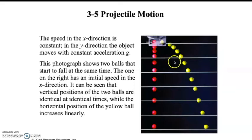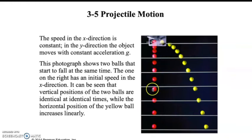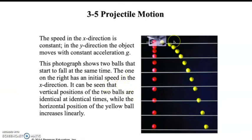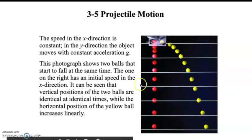If you look at two balls dropping — one dropping straight down and the other shooting straight out — as time goes by these balls are going to be moving at the same rate as they go down. In fact, they will hit the ground at the same time. Just because a ball is launched out horizontally does not mean it's going to land at a different time. They will land at the same time.